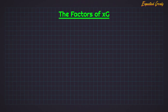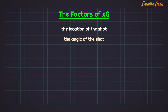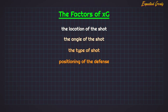There are multiple factors that Football Manager takes into account when calculating your XG. Things like the location of the shot, the angle of the shot, the type of shot — like if it's a header, free kick, or from open play — and even the positioning of the defense.